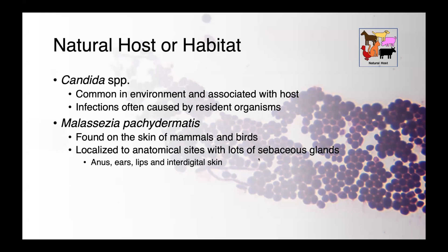Both Candida and Malassezia are host-associated organisms, and infections with Candida are often caused by one's own resident strains. Malassezia pachydermatis is found on the skin of mammals and birds, and it tends to be localized to anatomical sites where we have a lot of sebaceous glands — the anus, ears, lips, and interdigital skin.